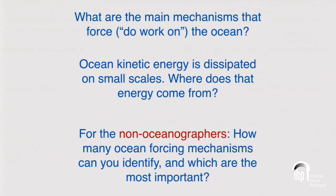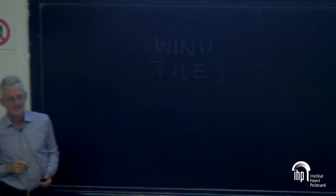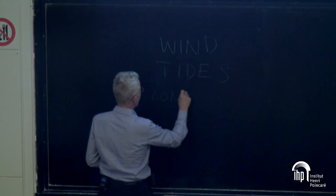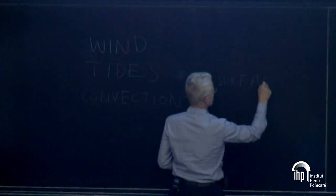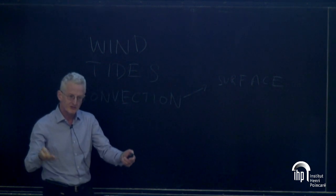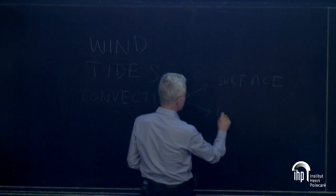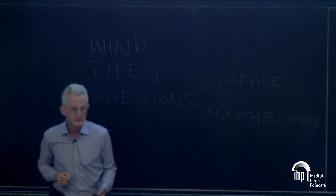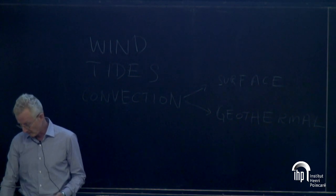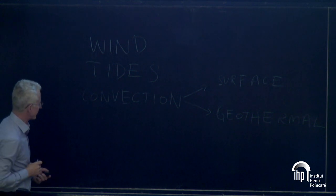Wind stress is one forcing. Tides — extraction of energy from the spin of the Earth — is another. There's also convection: surface-driven convection, where the poles are colder than the equator and patterns of precipitation create salinity differences. But the ocean is also heated from the bottom by geothermal heat. If you work out the Rayleigh number for geothermal heating, it's something like 10 to the 20, so it's not small Rayleigh number convection.